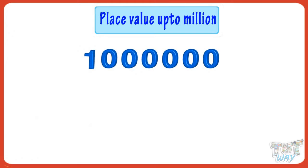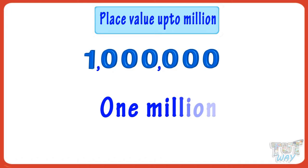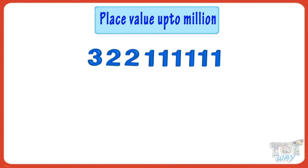Let's take another example. Put commas after every three digits from the left. Now we will read it like one million — the name of the second comma from the left is million and the name of the first comma from the left is thousand — but there are no digits to read, only zeros. So the number is one million.